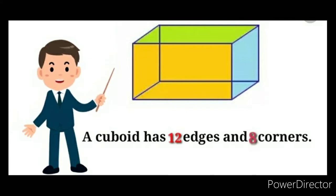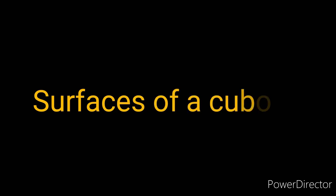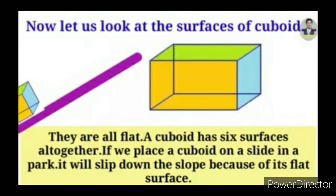Today, we are going to learn surfaces of a cuboid. Surfaces of a cuboid - they are all flat. A cuboid has 6 surfaces altogether.